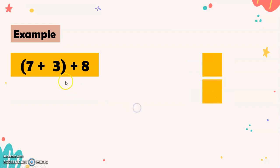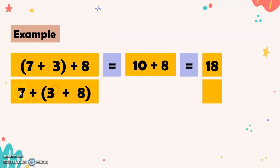So, another example. Open parenthesis, 7 plus 3, close parenthesis, plus 8. We have 10 plus 8 equals 18. And 7 plus open parenthesis, 3 plus 8, close parenthesis, equals 7 plus 11 equals 18. There you go.